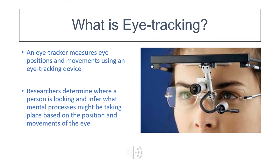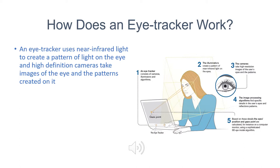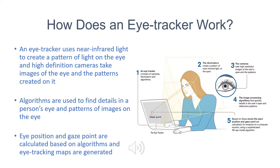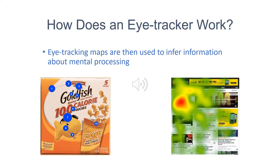An eye tracker measures eye positions and movements using an eye tracking device. Researchers determine where a person is looking and infer what mental processes might be taking place based on the position and movements of the eye. An eye tracker uses near infrared light to create a pattern of light on the eye and high definition cameras to take images of the eye and the patterns created on it. Algorithms are then used to find details in a person's eye and patterns of images on the eye. From this, eye position and gaze point are calculated based on algorithms, and then eye tracking maps are generated. Different eye tracking maps, as seen below, are then used to infer information about mental processing.